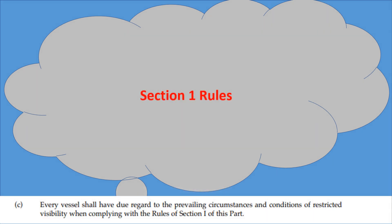Every vessel shall have due regard to the prevailing circumstances and conditions of restricted visibility when complying with the rules of Section 1 of this part. Section 1 rules of the Steering and Sailing Rules apply in all conditions of visibility. This means that Rule 5, Lookout, keeping a constant lookout around the vessel applies. Rule 6, Safe Speed, as we've just discussed, applies in restricted visibility.